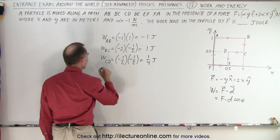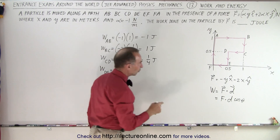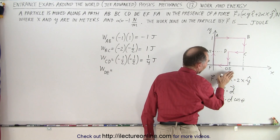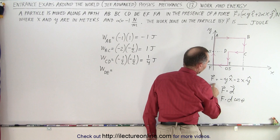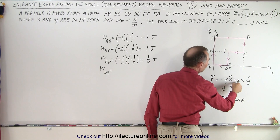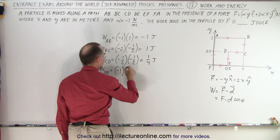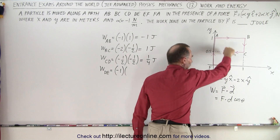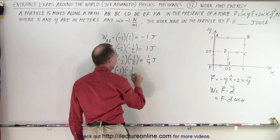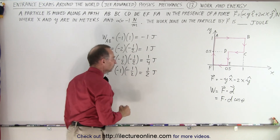Now the work done from D to E. We travel in the Y direction, so only the Y component is valid. The force is −2 times the X value of ½, giving −1. The displacement is in the negative direction — minus ½ — so (−1)×(−½) = positive ½ joule of work done from D to E.